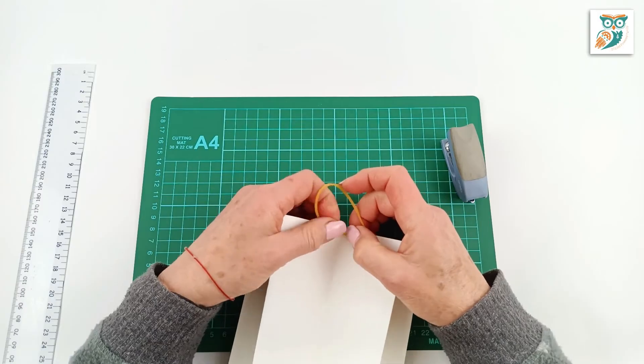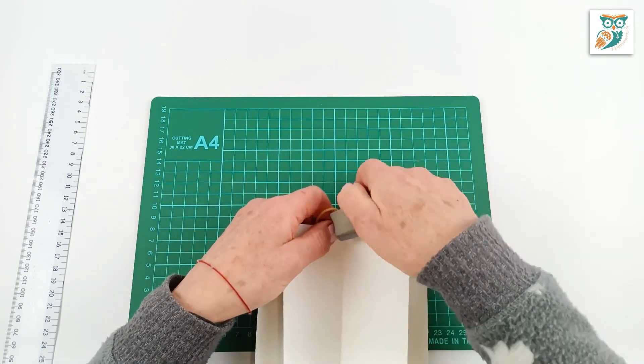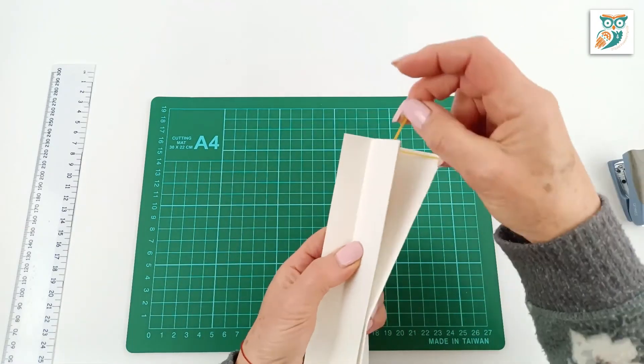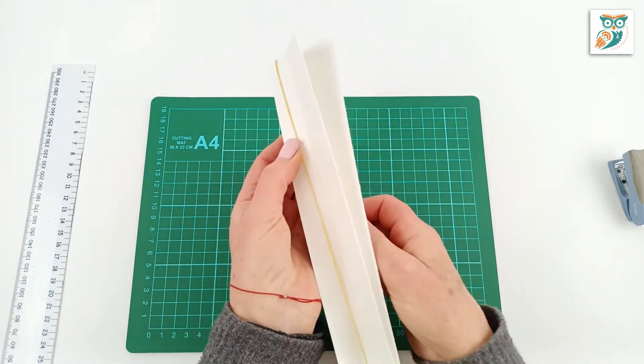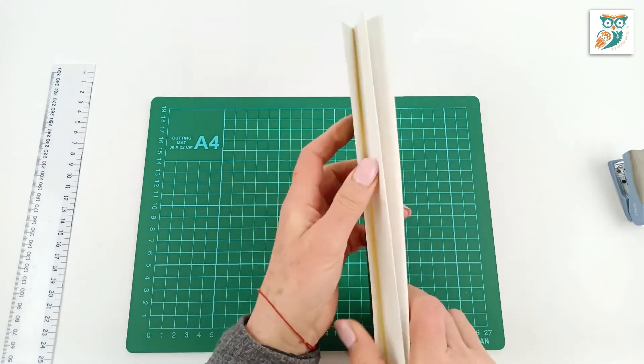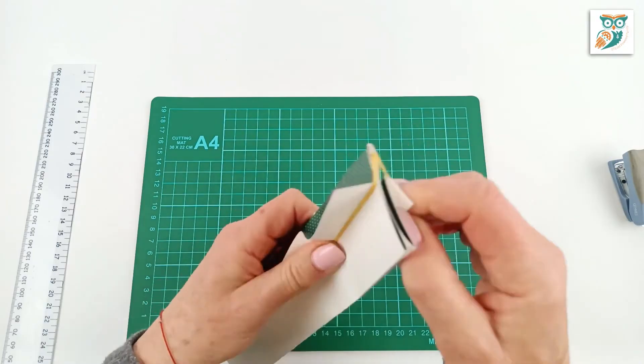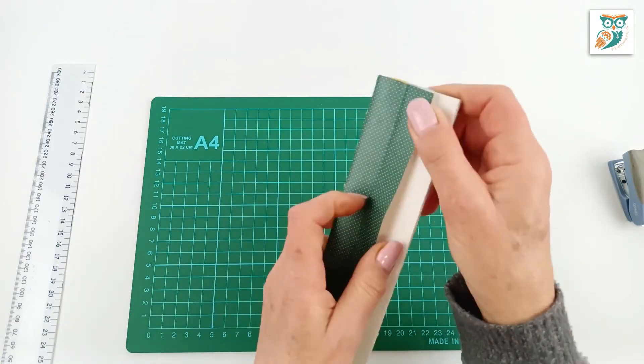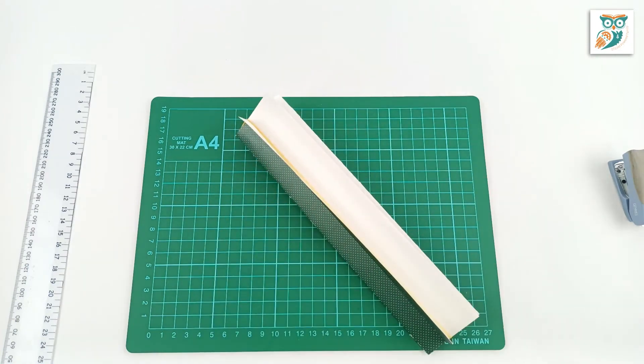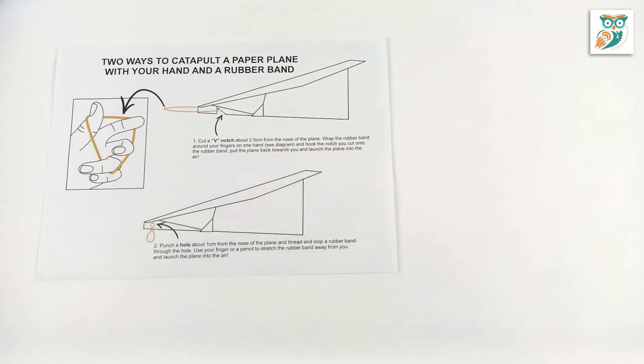Now we're going to take an elastic and we're just attaching it with a stapler. Super easy. And then bring the elastic around. And there we go. You can see we've made a nice little trench there for the paper airplane to sit in.